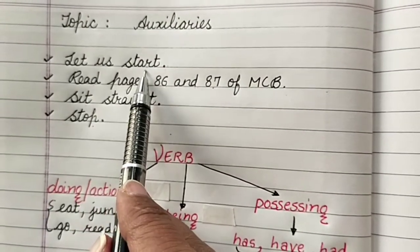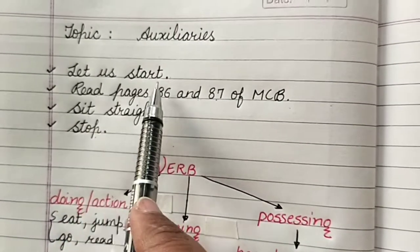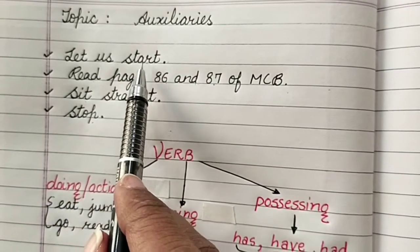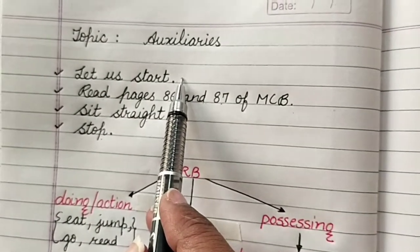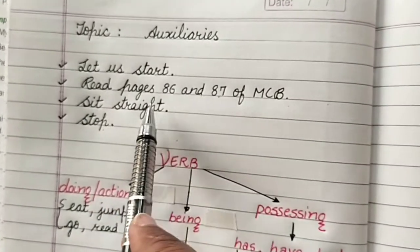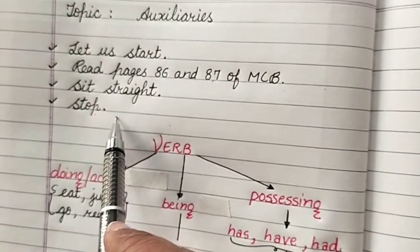It makes complete meaning. Let us start. So it's making a complete sense. So it is a sentence. Similarly, these three are also sentences.